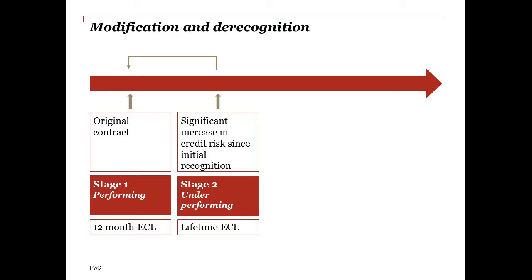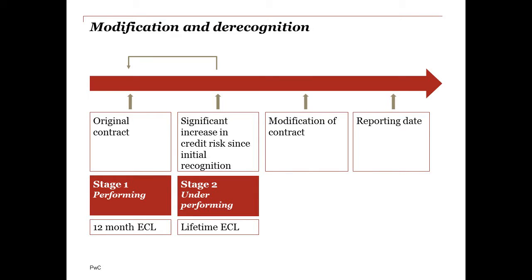Then assume sometime after that the bank renegotiates the loan with its customer and amends the terms — for example, it might forgive some of the interest or principal, defer some payments, or there might be a more fundamental restructuring of the terms. When the bank does that, the first thing it needs to determine for accounting purposes is whether the terms are now so significantly different that this is seen as a new loan, or whether it's seen as a continuation of the same loan.